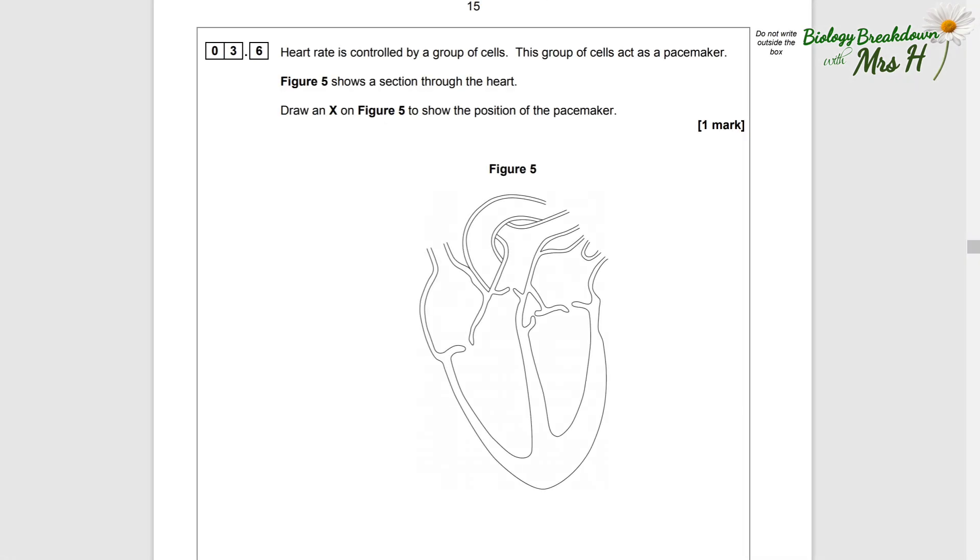3.6: Heart rate is controlled by a group of cells. This group of cells act as a pacemaker. Figure 5 shows a section through the heart. Draw an X on figure 5 to show the position of the pacemaker. Remember which side is left and right - imagine the heart is someone else's heart, and it is their left and their right. The pacemaker is found in the wall of the right atrium, so we'll put a cross here.